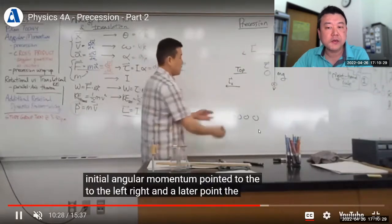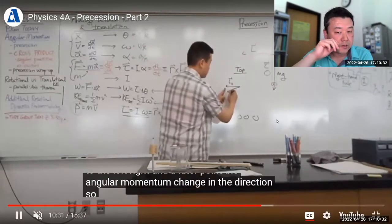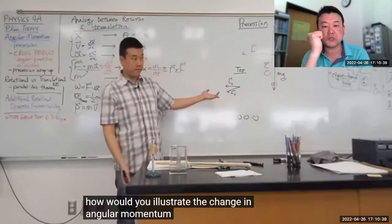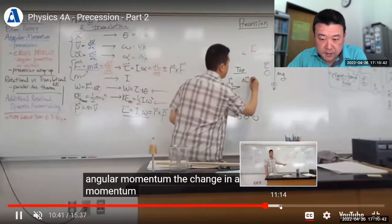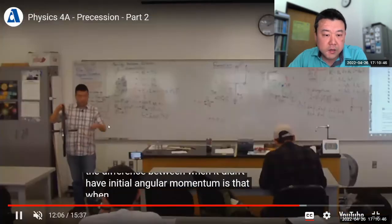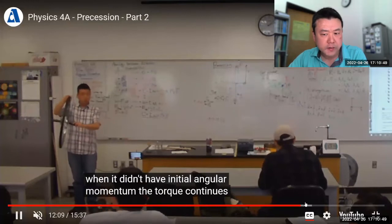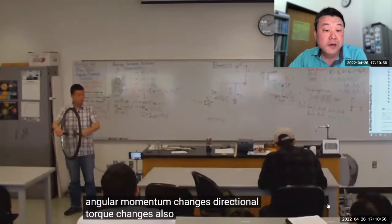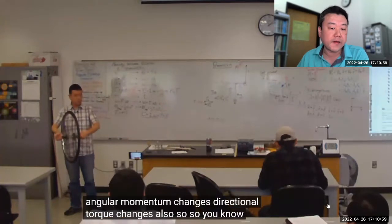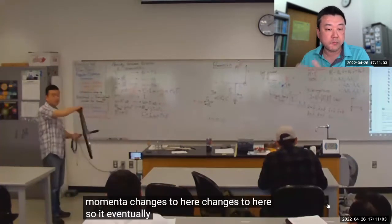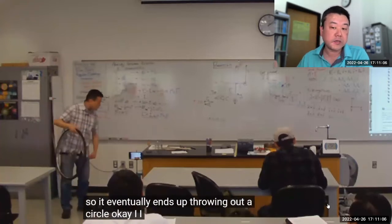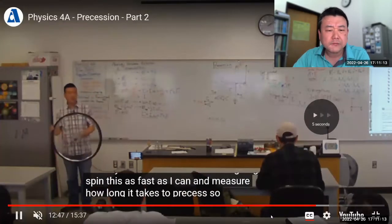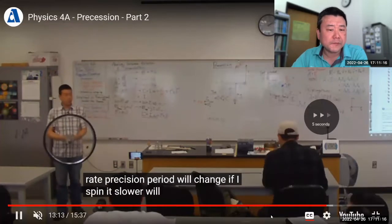This is where I'm describing the pre-session phenomenon in terms of the pre-existing angular momentum and the torque due to gravity that's changing the direction of angular momentum. I described the conceptual portions of it, and what I don't have enough time to finish is doing a more quantitative estimate of, given this model, what is the rate of precession? That's what I normally do in most semesters, but this semester I ran out of time to finish covering that.